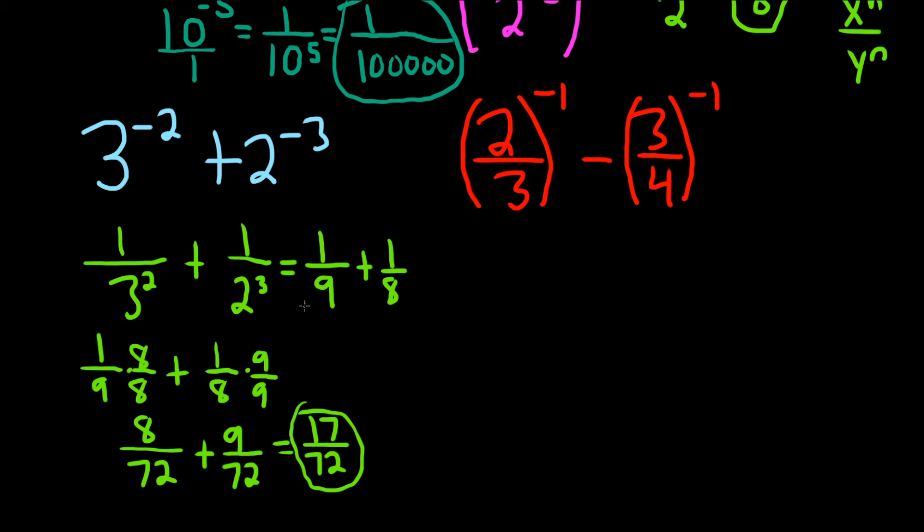So this takes a bit of practice to get good at. And I did go through that kind of fast. So we're trying to add 1 ninth to 1 eighth. The idea is you want the bottom to be the same. You want the bottom to be 72.